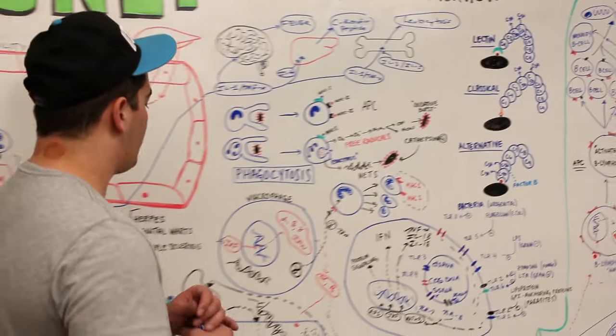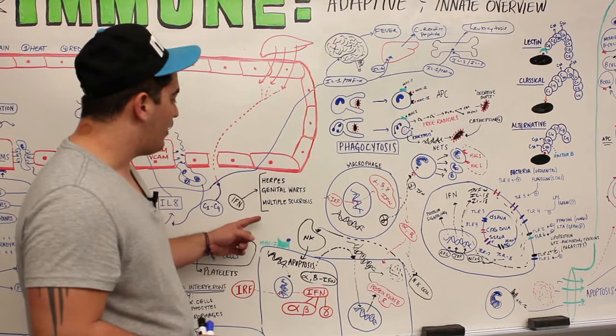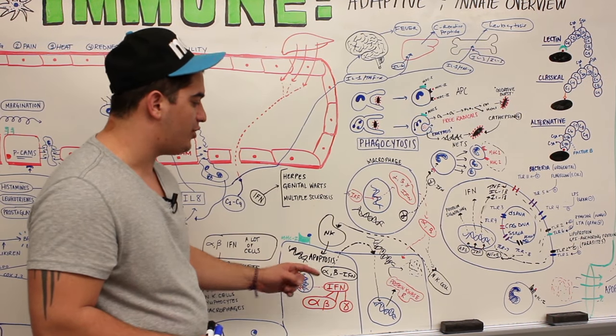What's the overall effect of these pathways? To produce the membrane attack complex to initiate lysis of the bacteria, to enhance opsonization by C3B, or to enhance the inflammatory response via C3A and C5A. That's the complement system, still in the innate immune system.